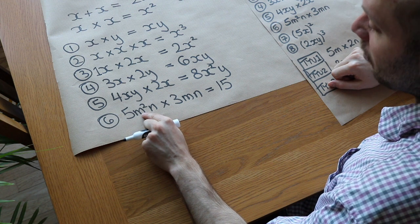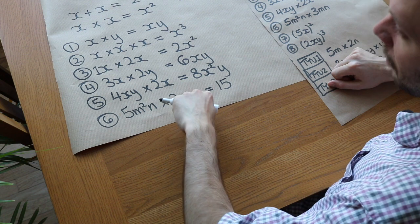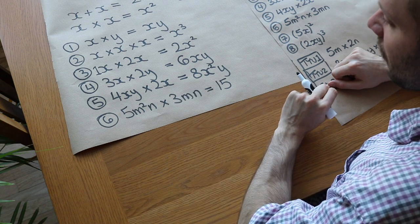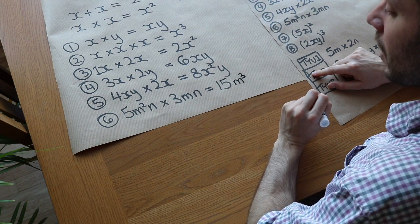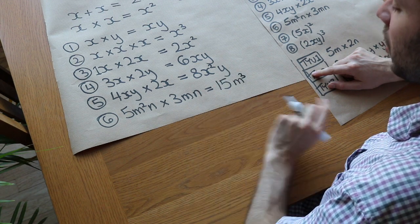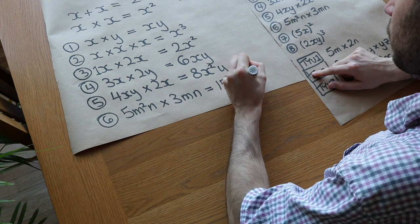So we've got m times m times another m. How many m's did we multiply together? Well, three of them. So it's m cubed. And then finally, we've got n times n, which we know is n squared.